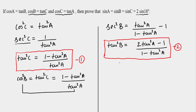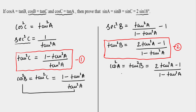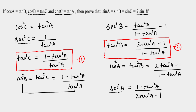Now, starting with the first relation: cos A = tan B. Squaring both sides, cos²A = tan²B = (2tan²A - 1) / (1 - tan²A). Taking the reciprocal, sec²A = (1 - tan²A) / (2tan²A - 1). Now both sides are in terms of A, so I'll convert sec²A into tan A to get a single equation in tan A, which I'll solve in the next slide.